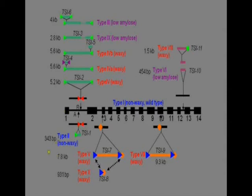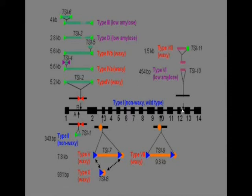The structural analysis of transposable elements inserted in the GBSS1 gene reveals the type of phenotype. Insertion of transposable elements occurs in 4 different regions of GBSS1 gene: Intron 1, Exon 3, Exon 10, and Intron 12. This transposable segment insertion is responsible for the amylose content variation which gives rise to waxy type with high amylose content, whereas the wild type species are non-waxy with low amylose content.